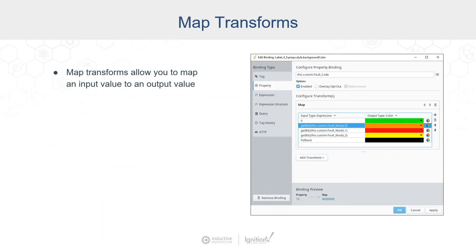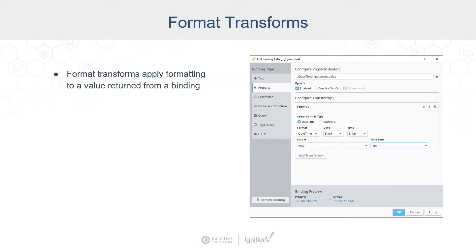There are four different types of transforms: map, format, script, and expression. The map transform allows you to map an input value to an output value — typically from a number to a color is a good example, but you can go from anything to anything. You specify the input type and the output type. It's a really great one that we often use with HMIs to color components.